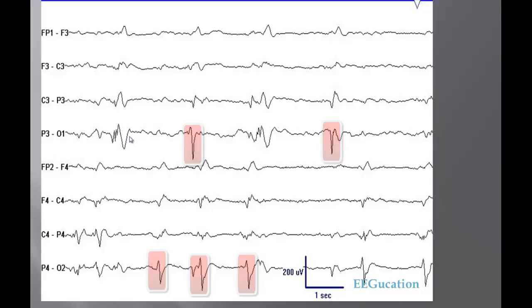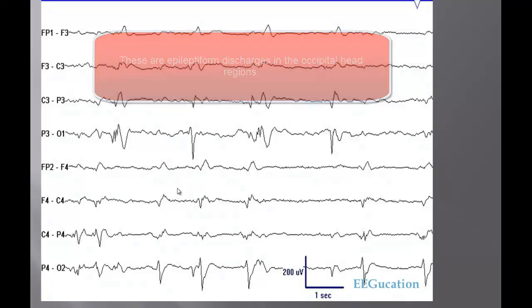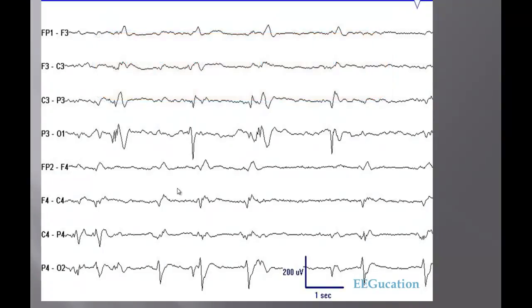If you look at these EEGs in a referential montage, you will be able to differentiate which we have done. These are sharp waves, these are epileptiform discharges in the occipital head region. So these are epileptiform activity, not benign variants. This person is at a higher risk of having seizures originating from the occipital head region.